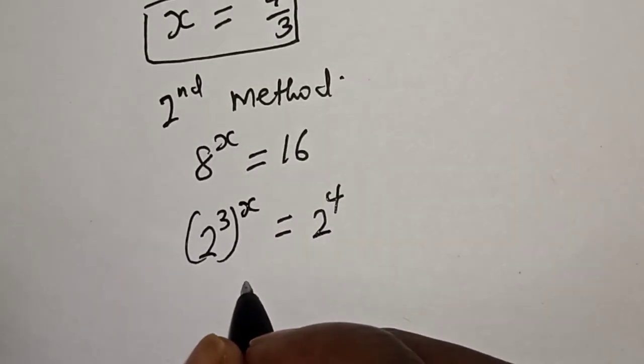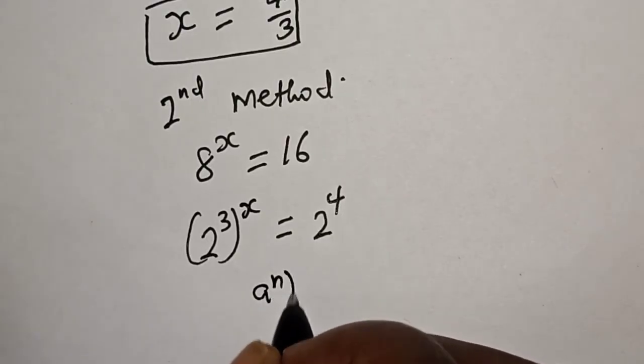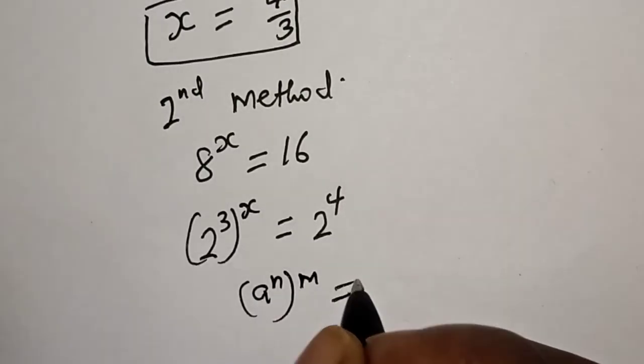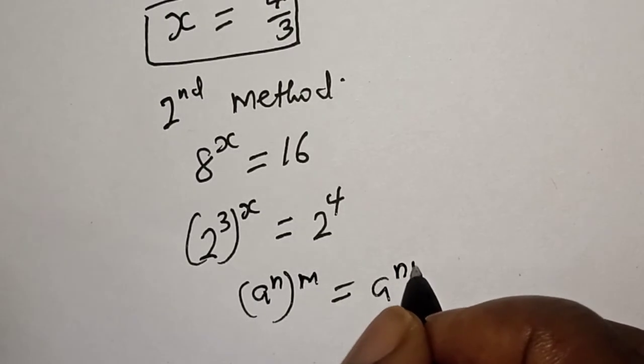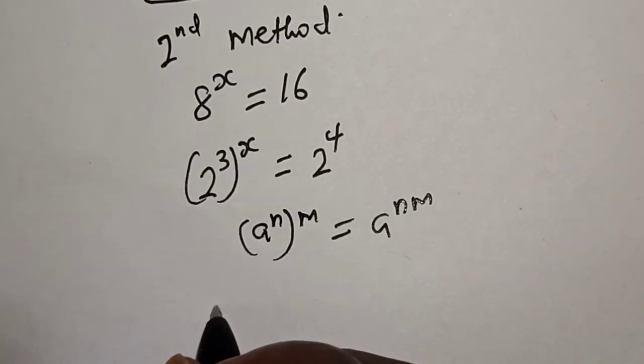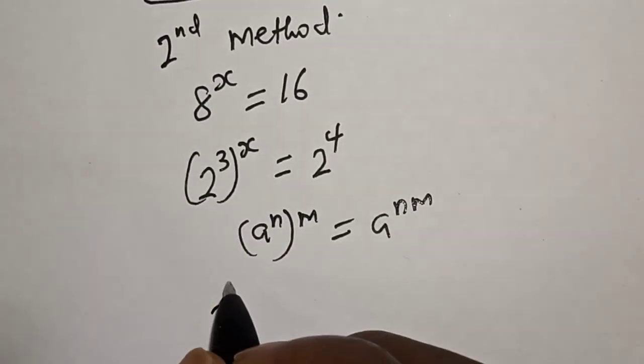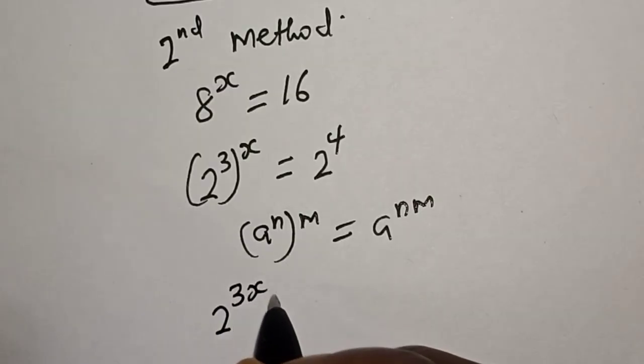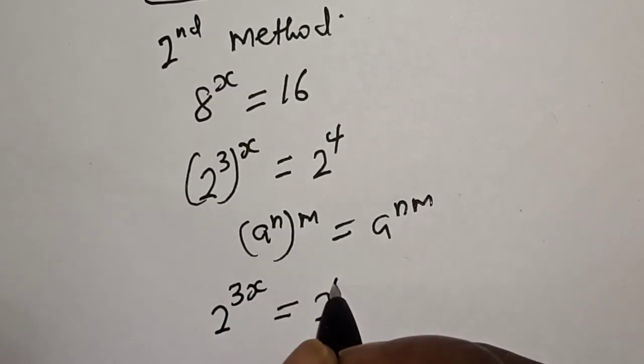Take note of this exponential rule that a raised to power n to the power of m is equal to a raised to power nm. Then, this is 2 raised to power 3 times x. 3x is equal to 2 raised to power 4.